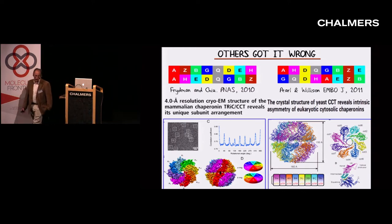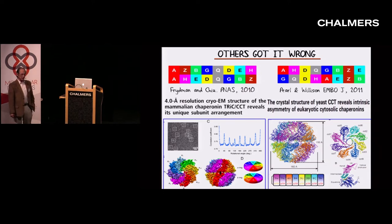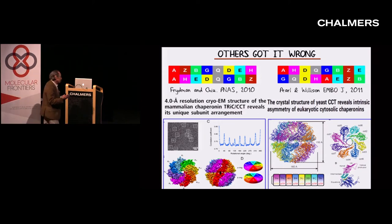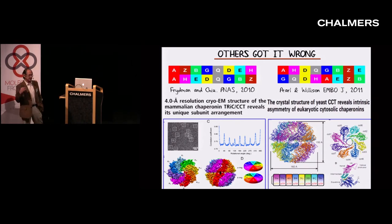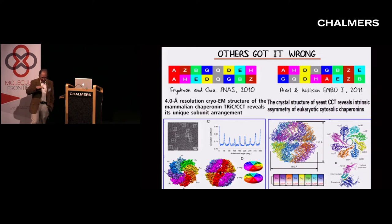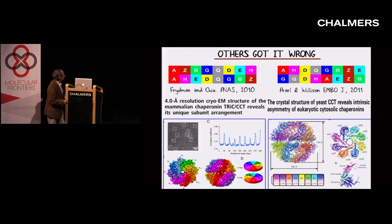At about the same time, I had a postdoc, Nir Kalisman, who came to me wanting to work on mass spectrometry. I said I have no idea what mass spectrometry is — in fact for most of the time he was with me I thought it was mass spectroscopy. It turns out that to our surprise it isn't that hard to do. Something like 16 cross links in a structure of 1 megadalton completely solved the problem.